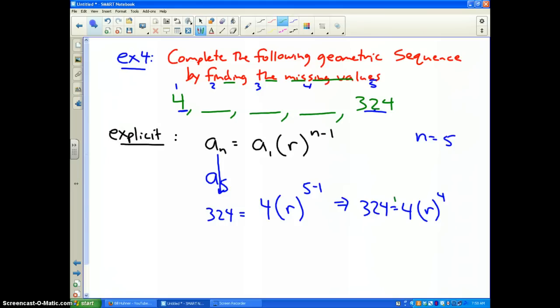Now I solve that. Well first of all, I divide by 4. So 324 divided by 4 is 81, which is equal to r to the 4th power. Now how do you solve r to the 4th power? On your calculator you have a button called math, and underneath math you have a key that looks like the nth root.